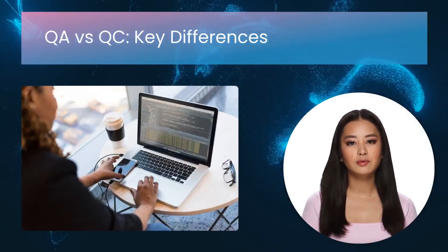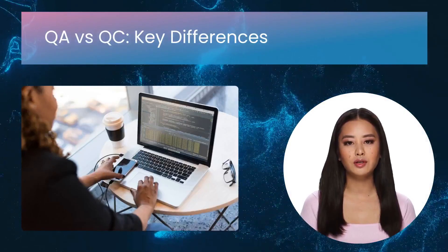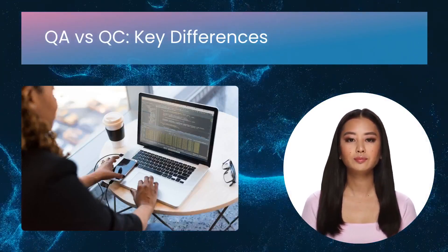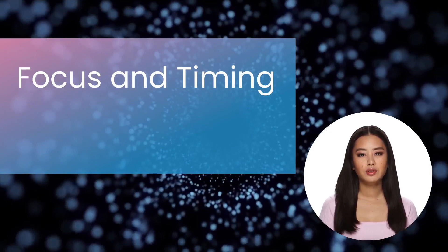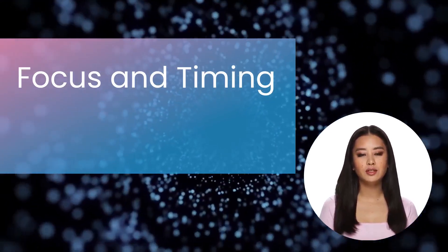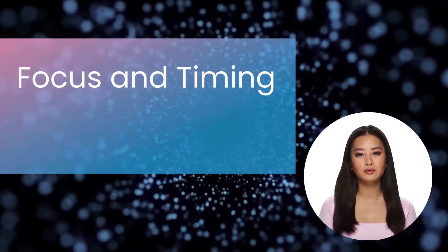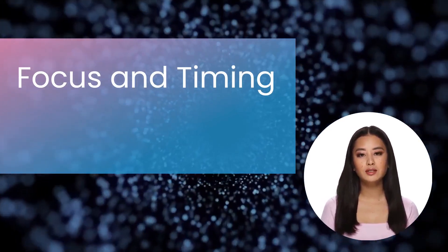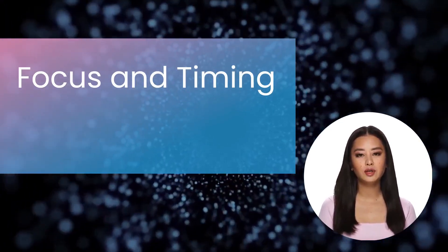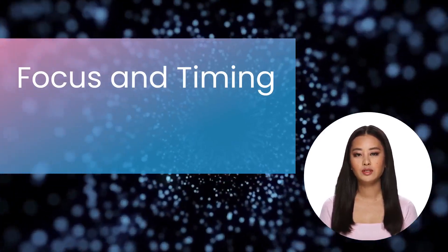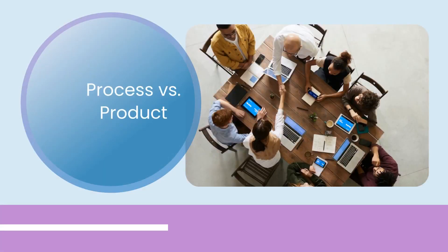Let's look more closely at the differences between QA and QC. Quality assurance works throughout the manufacturing process to stop problems before they happen. QC, on the other hand, comes in at the end and its main job is to find and fix problems with goods before they reach the market. QA is about making and maintaining manufacturing systems that work well, while in QC, defects are found and fixed in the end product through inspecting and testing.